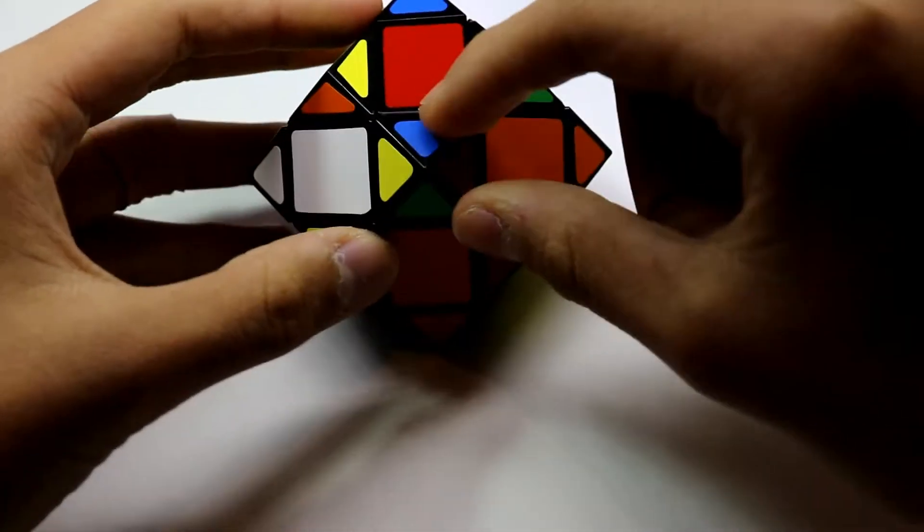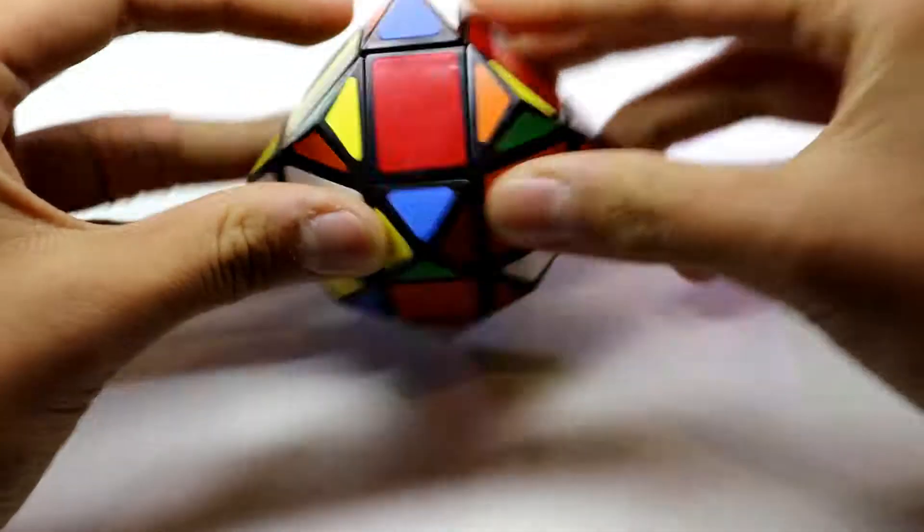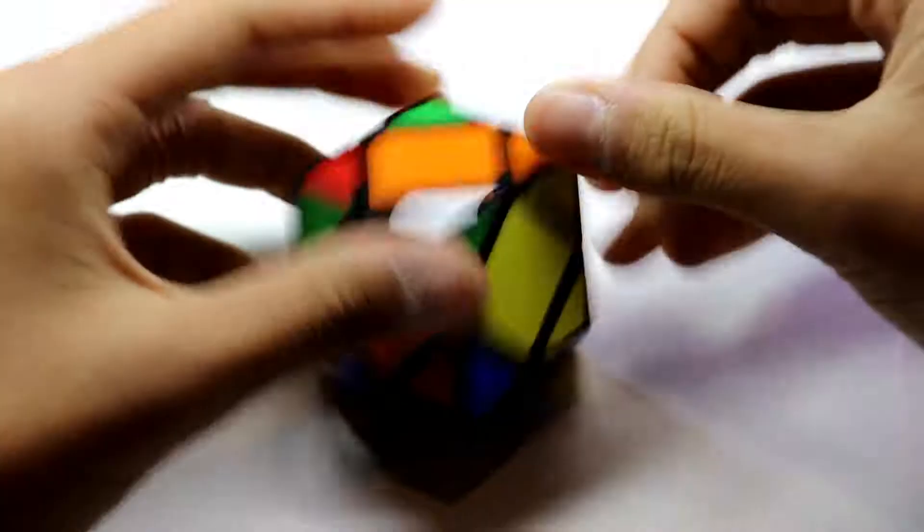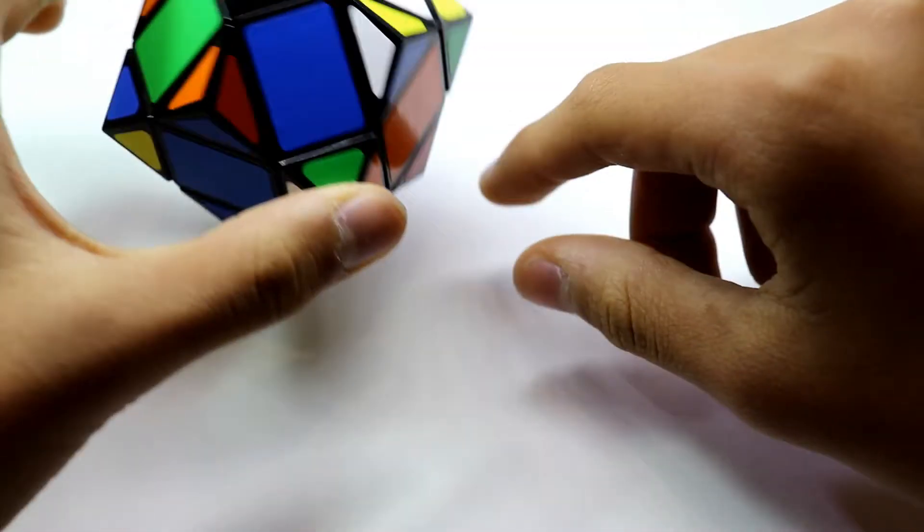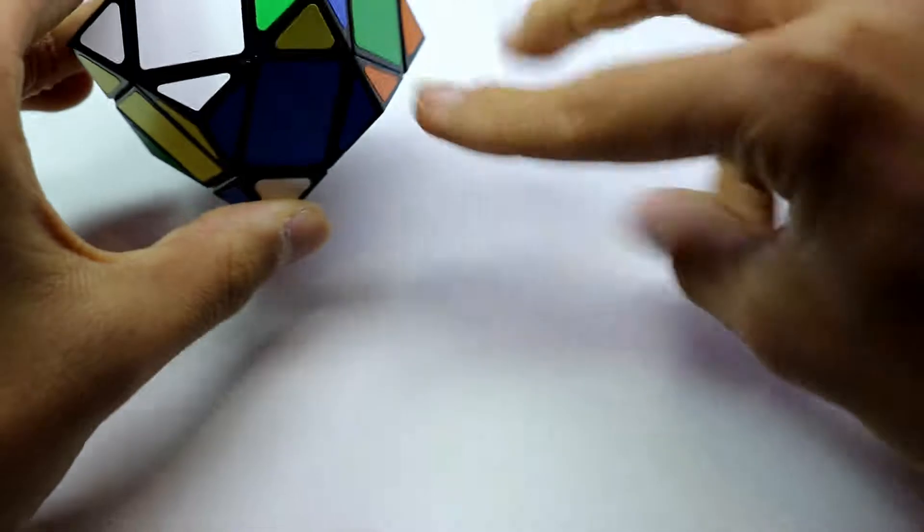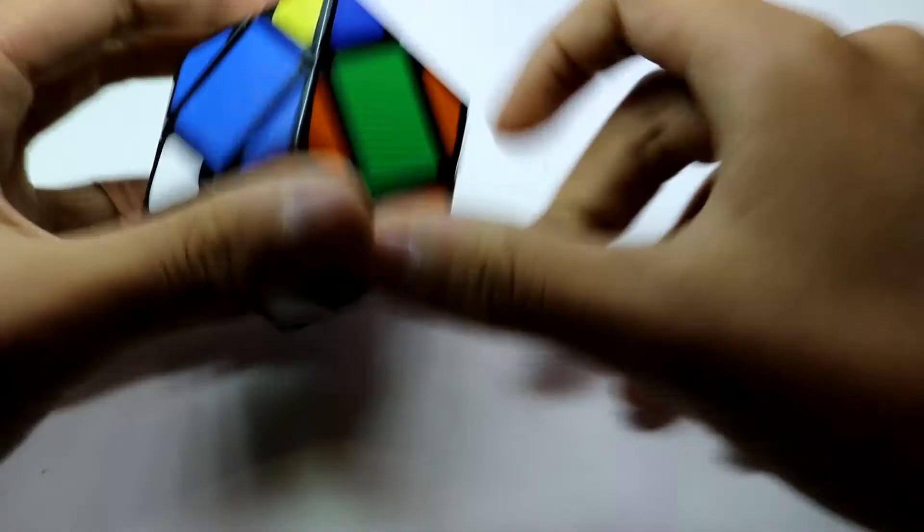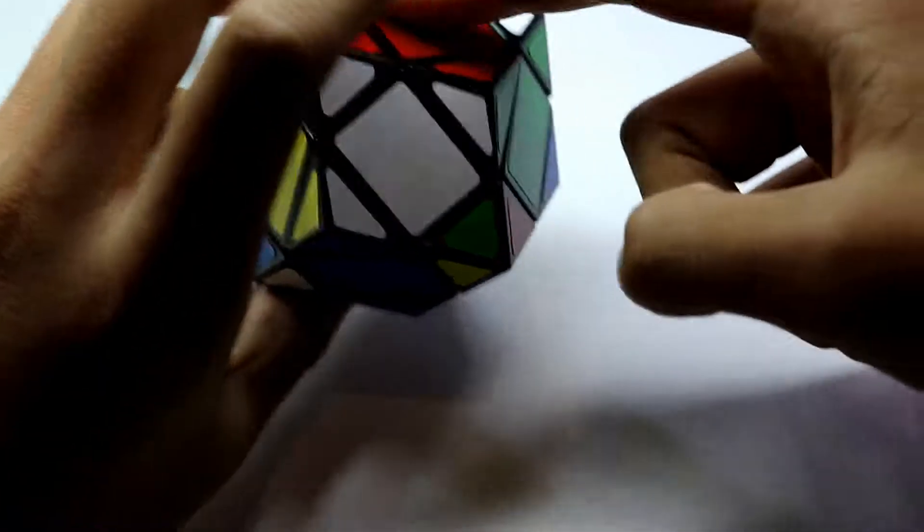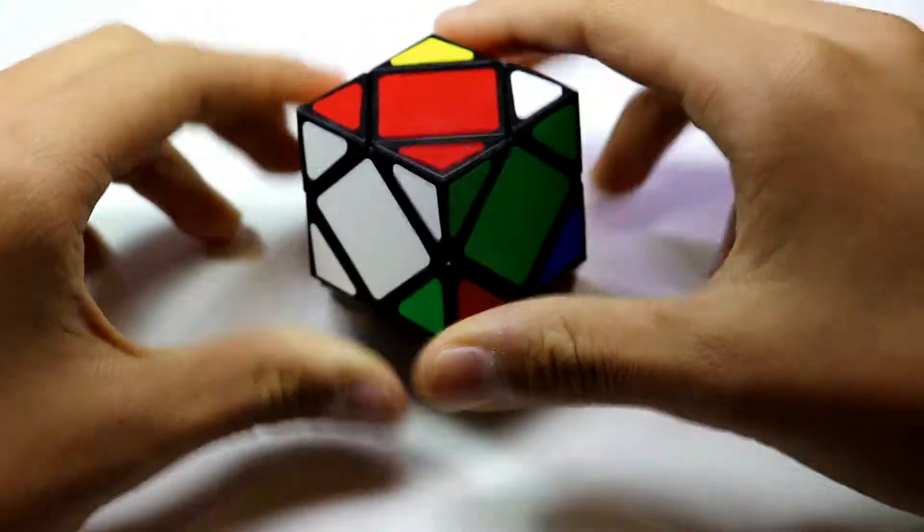And in this one, the centers have four colors, which makes it have 12 sides. So there is two of each color, so there's one blue, and the opposite of the blue right there will also be a blue color.